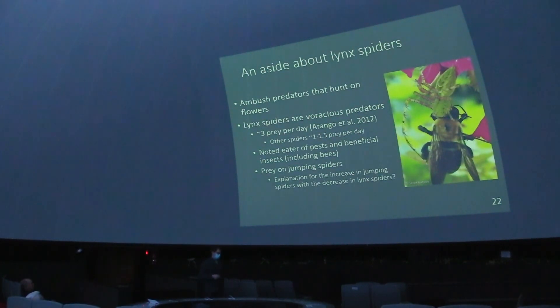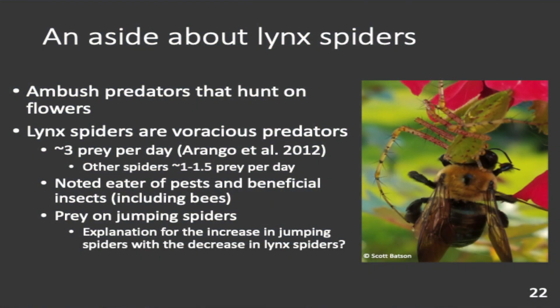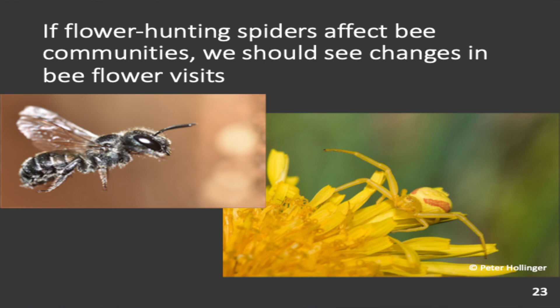They pretty much just eat everything. They even eat other spiders — and what's amazing about this picture is that this spider is missing three legs on one side yet it still caught a carpenter bee. If you know how big a carpenter bee is, that's pretty impressive. So they're pretty amazing but also potentially at the detriment of some bees.